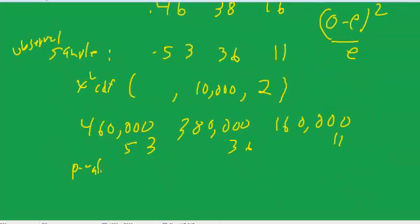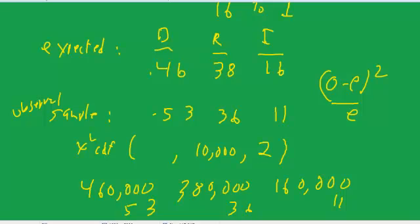So p-value equals 0.255. If we set a standard of 0.05, this is above that, so we would fail to reject, and we would say that this sample is close enough to the expected that we feel okay with this sample.